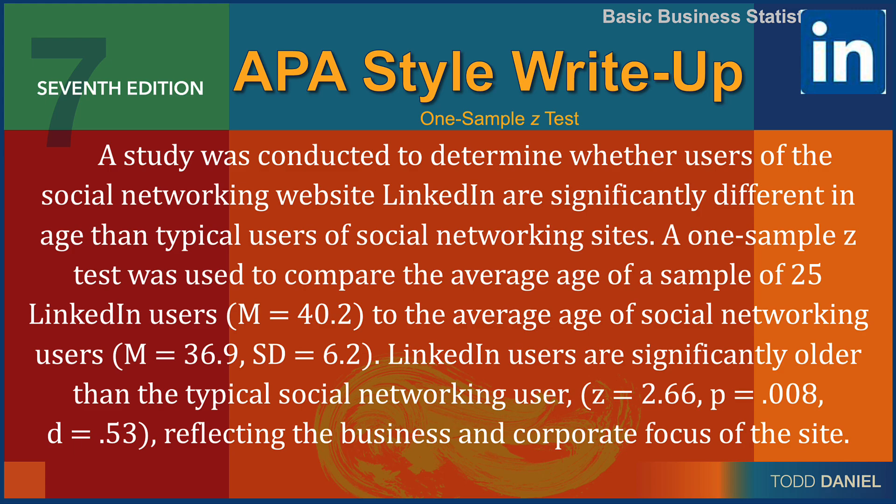We've made that determination, and now we write up the results in APA style. A study was conducted to determine whether users of LinkedIn are significantly different in age than typical social networking users. A one-sample z-test compared the average age of a sample of 25 LinkedIn users (mean = 40.2) to the average age of social networking users (mean = 36.9, SD = 6.2). LinkedIn users are significantly older than the typical social networking user, z = 2.66, p = 0.008, effect size = 0.53, reflecting the business and corporate focus of the site.